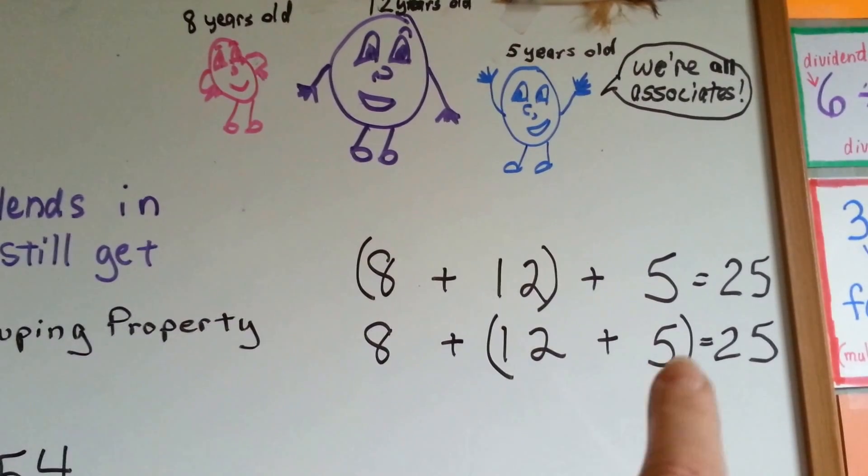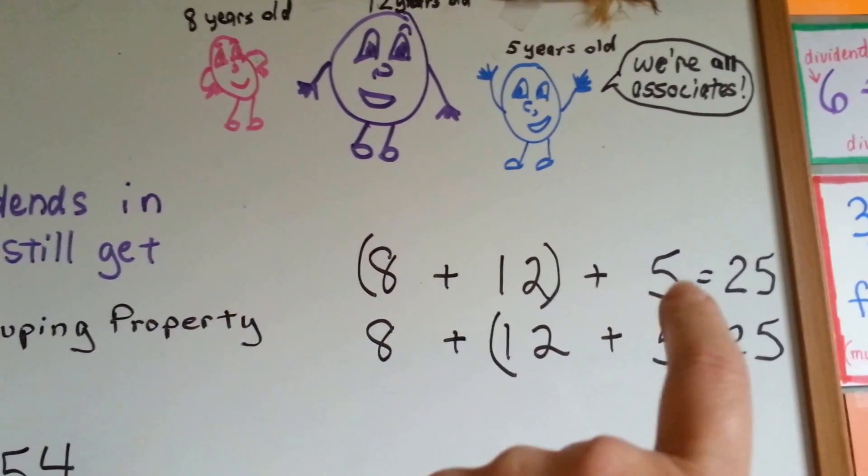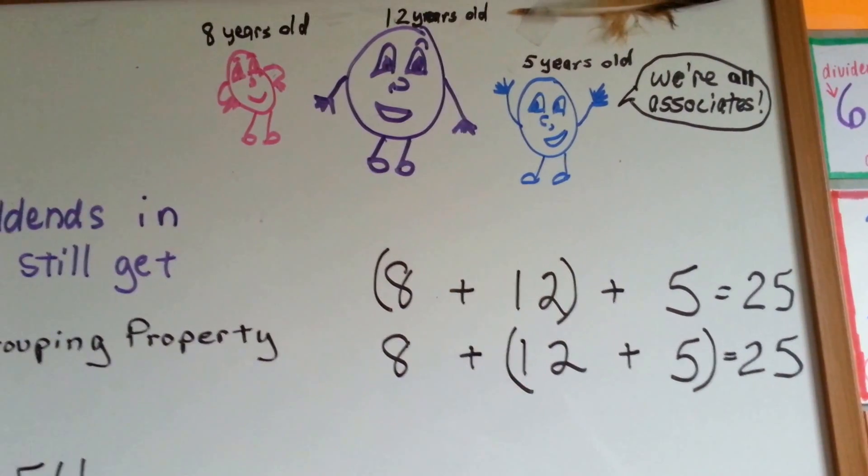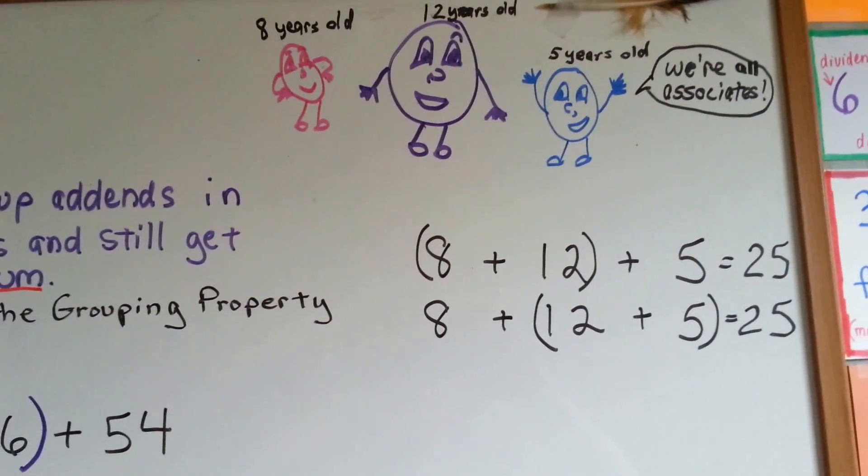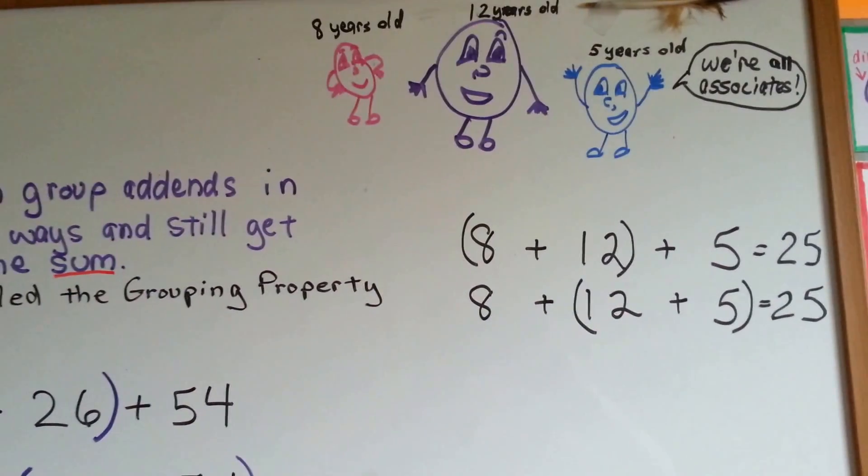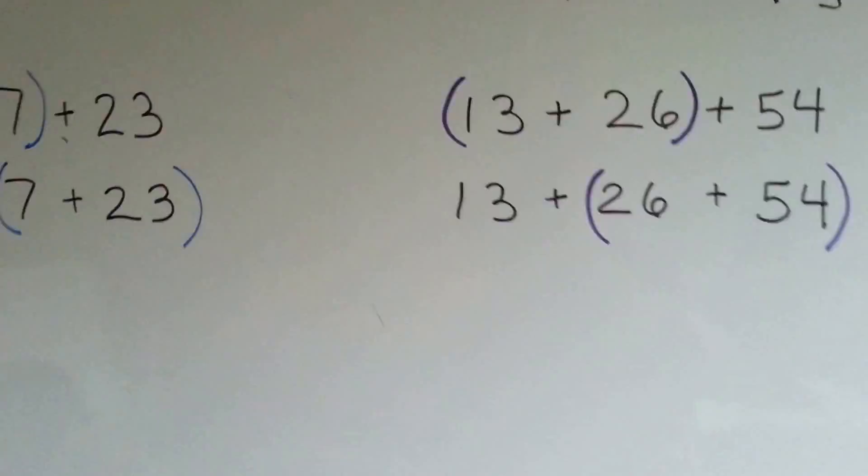If you added these two together, you'd get 17 and then you'd have to add 8. So the top one would be the easier way. So the associative property can help you add quicker. You'll still get the same sum. It just depends on how you group it. That's why it's called the grouping property. So let's take a look at this one.